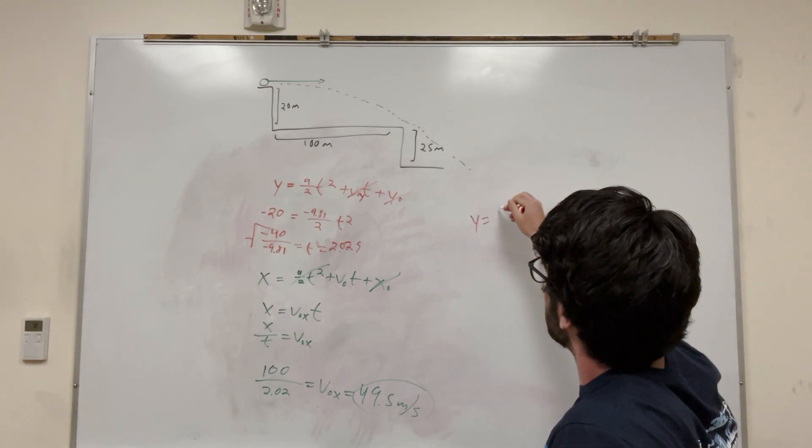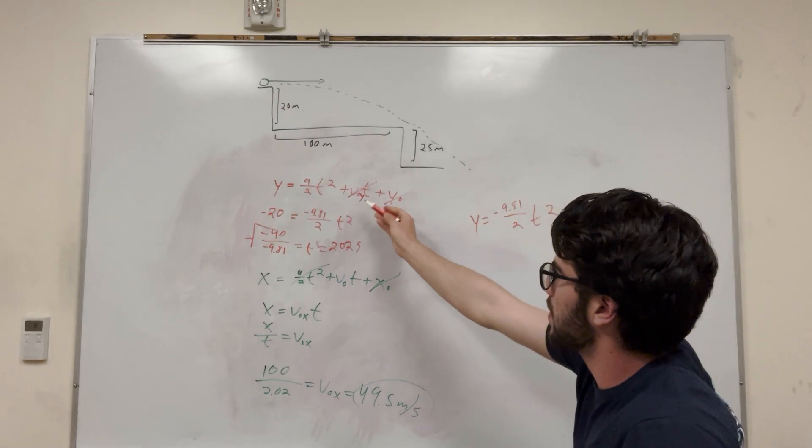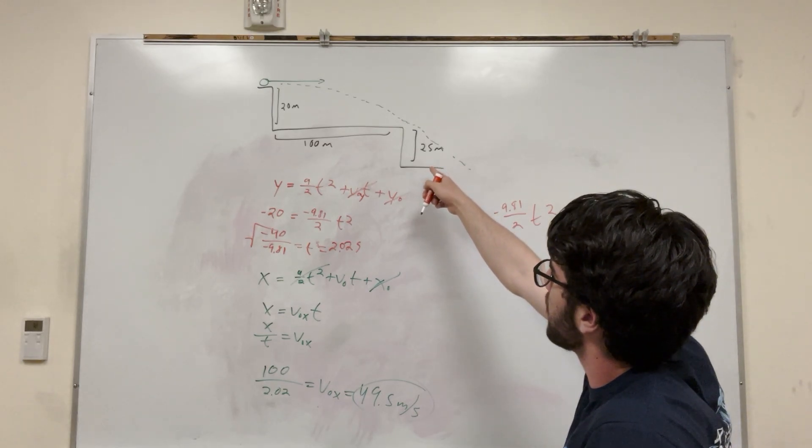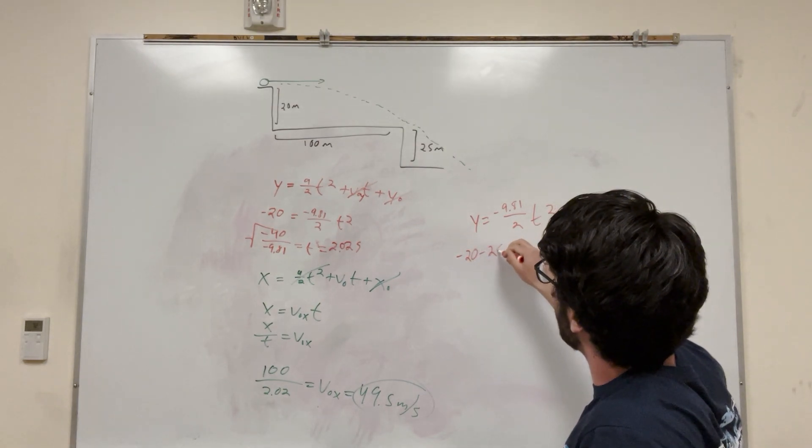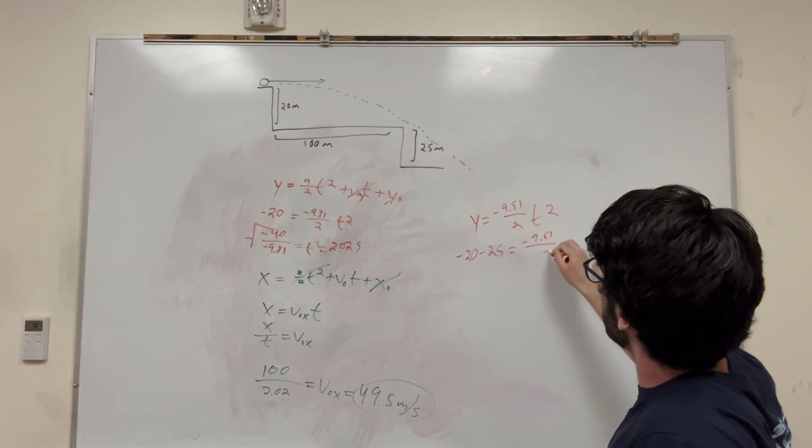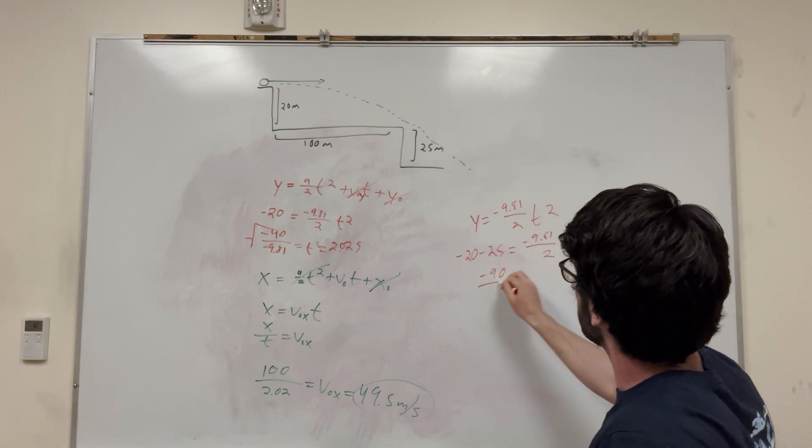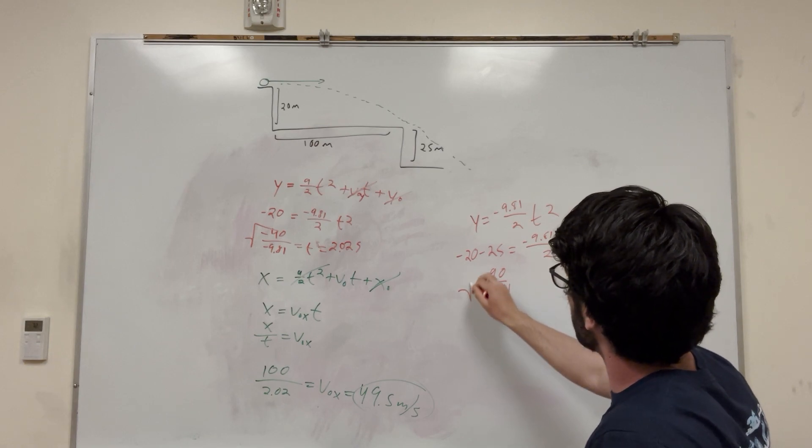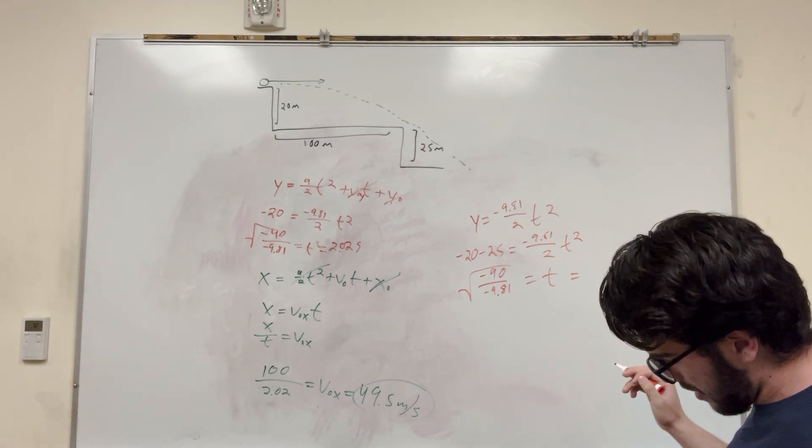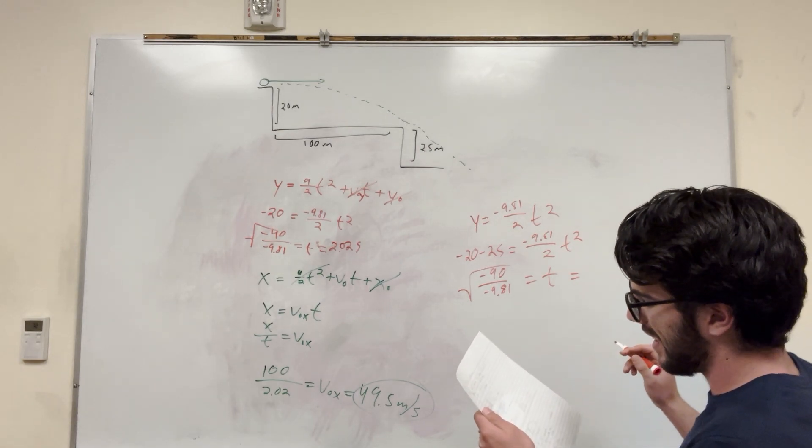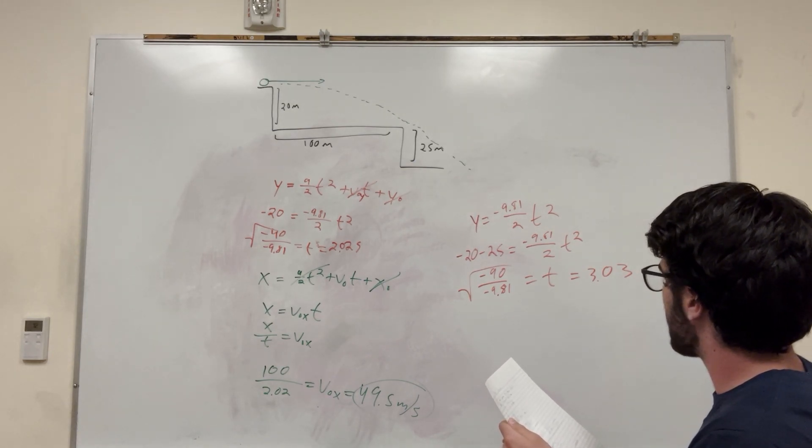So we have y is equal to negative 9.81 divided by 2, t squared. And then we know that v naught is equal to 0, and y naught is equal to 0. So we're seeing how long it takes to go 20 meters plus 25 meters. So we're going to fall 20, and then another 25 is equal to negative 9.81 divided by 2, t squared. So then you need to multiply this over. So this will be negative 90 divided by negative 9.81. Take the square root of that is equal to t. And this number is, oh, that's the wrong question. Okay. This is going to be 3.03 seconds this time. That's how long it's going to take to fall.